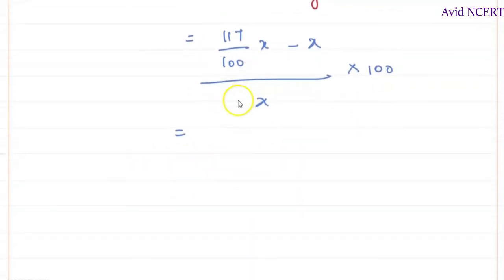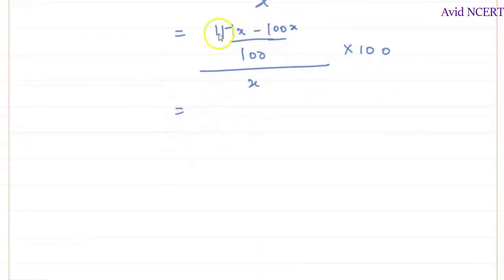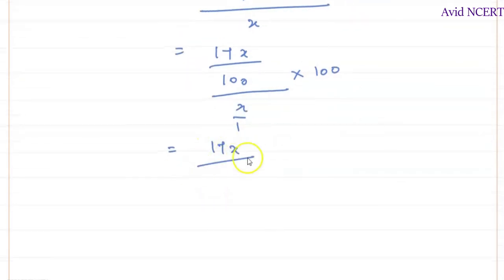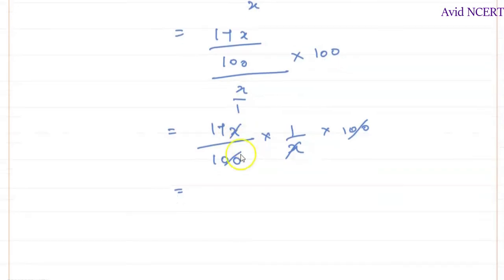Taking 100 as the LCM, this becomes 117X minus 100X, divided by X, times 100. Simplifying: 117 minus 100 is 17, so we get 17X divided by 100, divided by X, times 100. The 100s cancel and the X's cancel, which equals 17 percent.